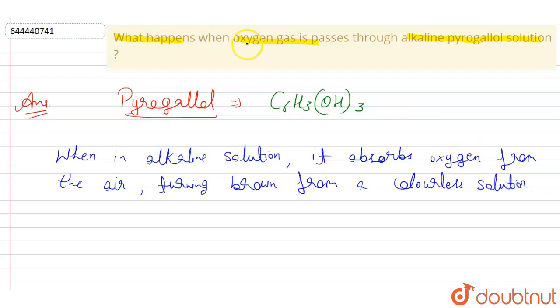So therefore, when oxygen gas passes through alkaline pyrogallol solution, the pyrogallol solution turns brown.